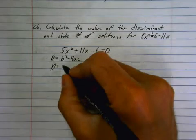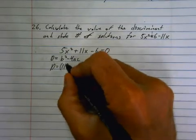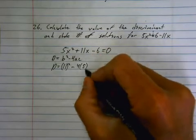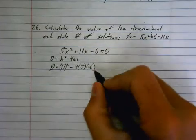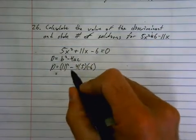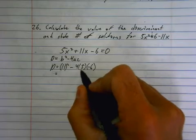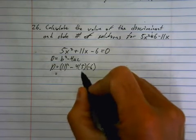Our discriminant is 11 squared minus 4 times 5 times negative 6. Don't miss that negative, which is 121 plus 120. I'm just going to punch this in.